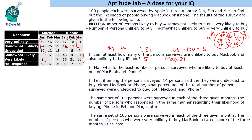The next question: in March, what is the least number of people surveyed who are likely to buy at least one of MacBook and iPhone? In March, the number likely to buy MacBook is 18 and likely to buy iPhone is 59. We have to find the minimum number of people who are likely to buy at least one of MacBook and iPhone.